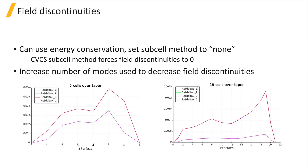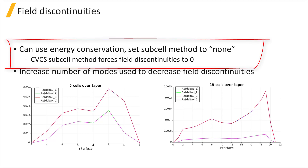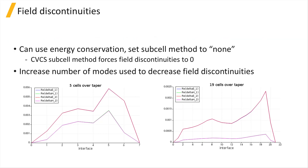Checking the field discontinuity values delta E1, delta E2, delta H1, and delta H2 from the local diagnostics results can show you where more modes are needed. Make sure that the CVCS subcell method is not being used. If you see a peak in the field discontinuity values at a particular interface, the number of modes should be increased in the cells on either side of that interface.